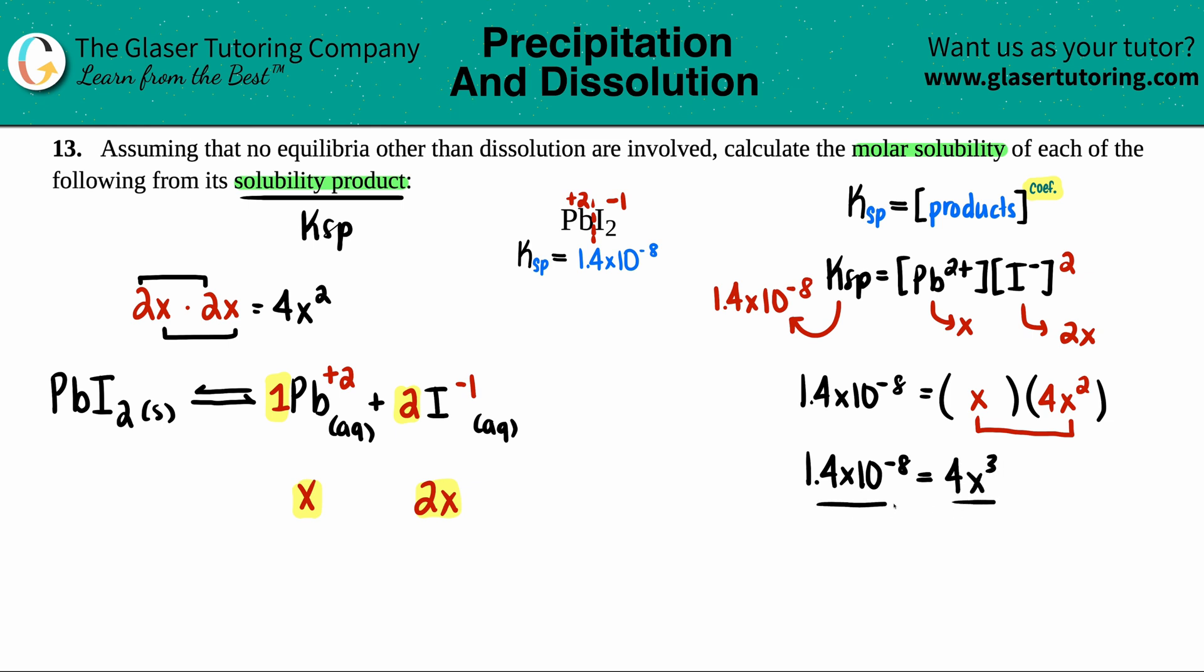Now this is just going back to algebra. We're going to divide by four on both sides. Calc your time. Try not to round during the middle numbers here. So this would just be 3.5 times 10 to the negative ninth equals X cubed.